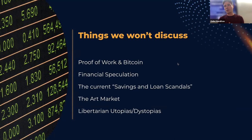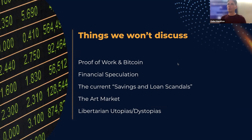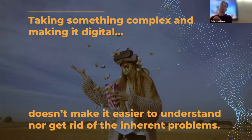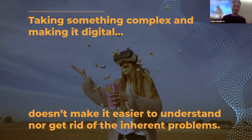We'll talk about some of the decentralized use cases for smart contract blockchains. Some people try and really take that to, oh, it's going to be this utopia of no censorship — or maybe that's a dystopia. We won't get too far into that. We'll look at great uses for decentralization but won't take it to an extreme. All of those things are in the category of taking something that's already complex in the real world and making it digital — that doesn't solve the problem. You still have to deal with the problems inherent in any space, whether you add blockchain or not.